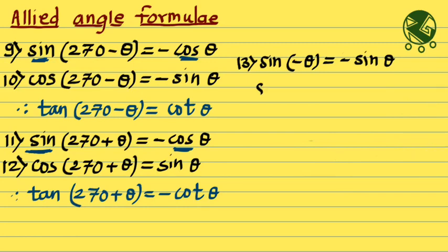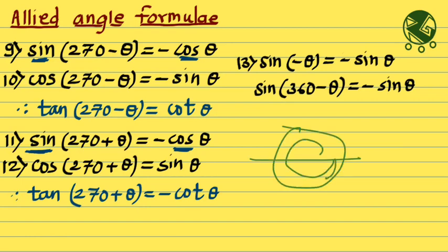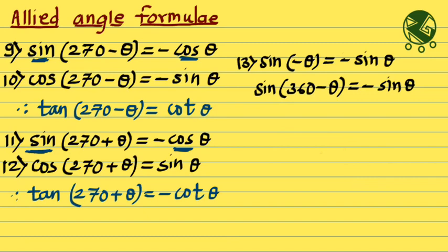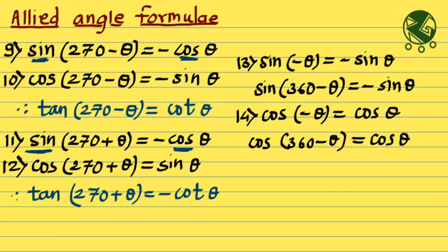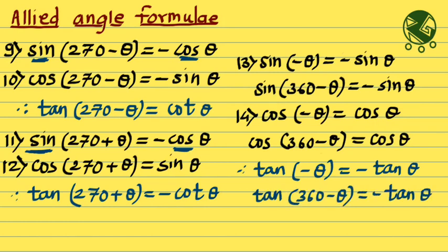Sine of 360 minus theta is the same as sine of minus theta because 360 minus theta and minus theta land on the same place, so sine of 360 minus theta is minus sine theta. Cos of 360 minus theta is cos theta. Tan of minus theta is minus tan theta, and tan of 360 minus theta is also minus tan theta.